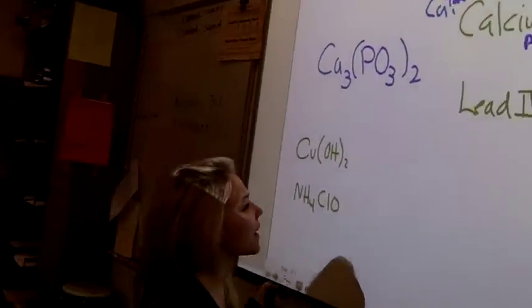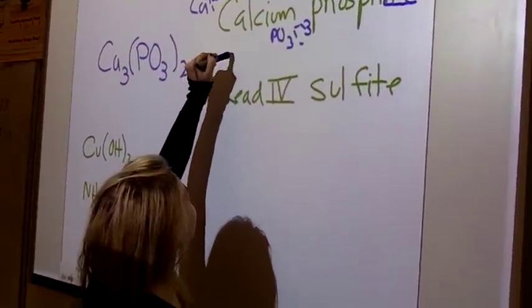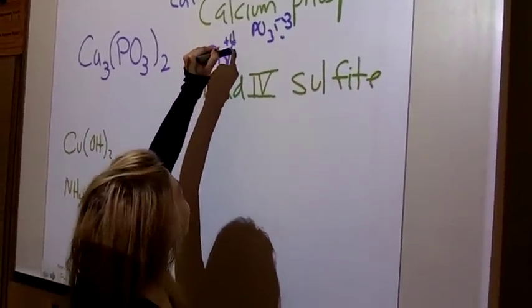For lead, you have what the charge on lead would be. You would write it as Pb+4.